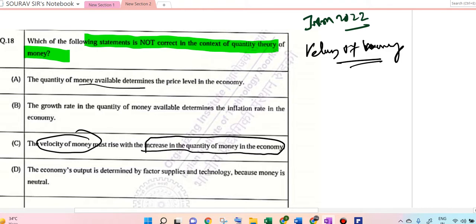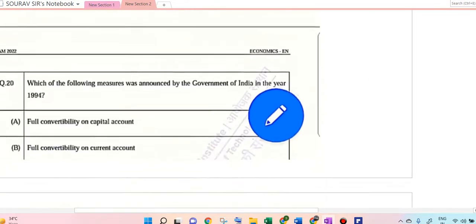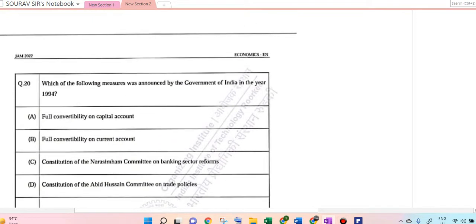The quantity theory is MV equal to PQ, so this is also correct. Answer is C. Question 18: Which of the following measures was taken by the government in India in the year 1994?